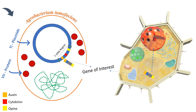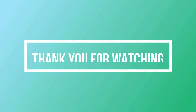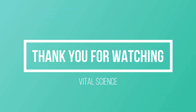An interesting fact is that scientists simply replace the T-DNA region containing auxin and cytokinin with their gene of interest. Whenever it is transcribed in the plant cell, it results in the required gene expression. This is how genetic transformation works in plants. We hope this video will be helpful for you — thank you so much for watching.